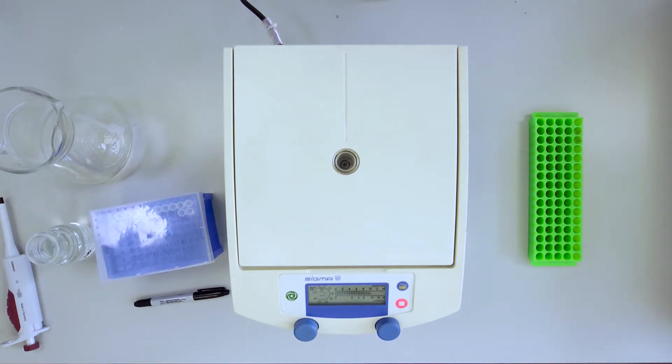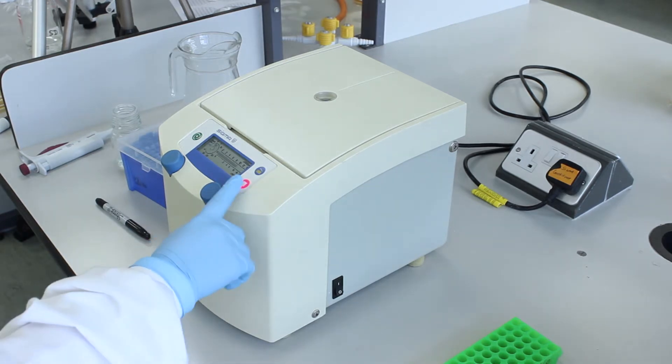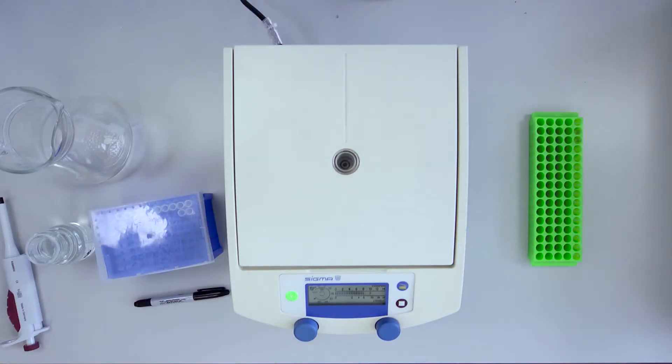When a centrifuge is off balance, it may shake or wobble and emit a loud shrill sound. This can damage the equipment and can also lead to injury in severe cases. If any of these things happen, switch off or cut power to the centrifuge immediately.